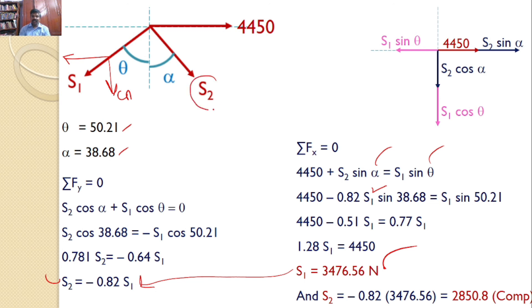Why I am getting minus? Initially, I am assuming that S2 is tensile. That's why the forces are away from the point. But here I am getting negative. That means the force S2 is not tensile. The force S2 is compressive. So, S2 is equal to 2850.8 newtons and that is compressive. So, S1 and S2. These two are the answers for the given problem.